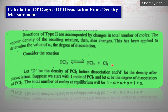So in this way, the vapor density of the products in this typical reaction will double. This change in vapor density can be applied in order to determine the value of alpha, that is, the degree of dissociation.